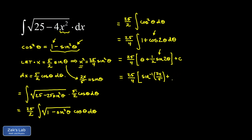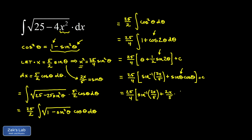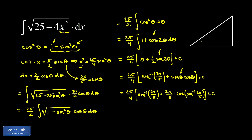That factor of 2 cancels the one half out in front, leaving just sine theta cosine theta plus c. Now substituting theta equals inverse sine of 2x over 5: the sine of the inverse sine of 2x over 5 just gives 2x over 5. The remaining work is finding the cosine of the angle whose sine is 2x over 5. Whenever we have a trig function of an inverse trig function, we can express it as an algebraic function using a geometric construction — drawing a right triangle.